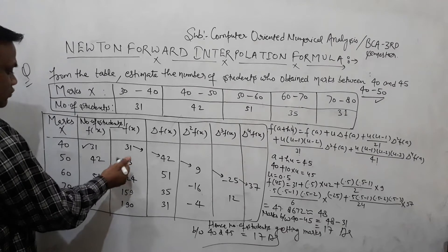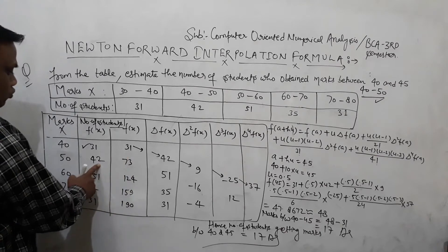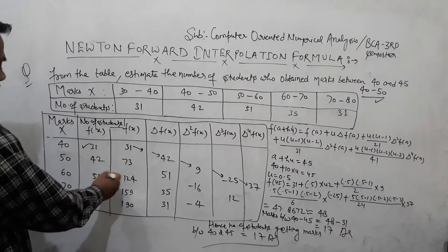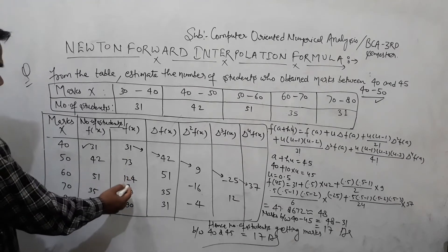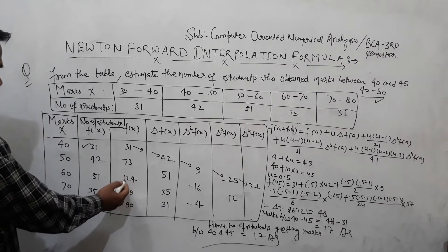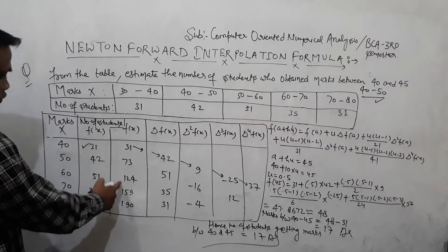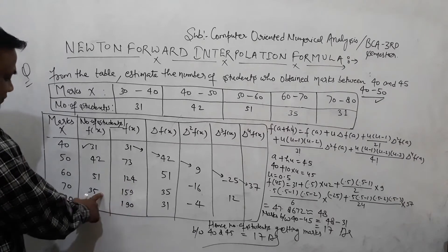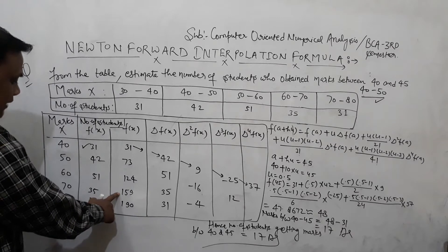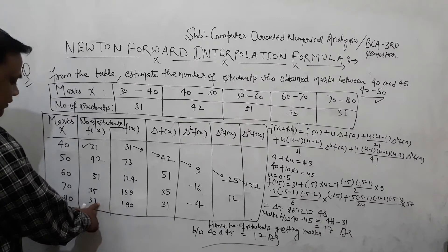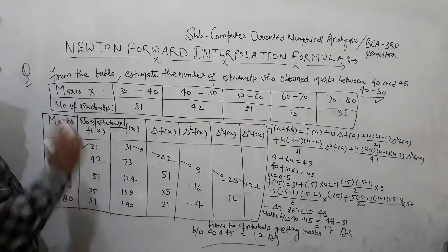Computing cumulative frequencies: first value is 41, add 42 to get 83, add 51 to get 124, add 35 to get 159, and add 31 to get 190. So the cumulative frequency table has values 41, 83, 124, 159, and 190 corresponding to the mark intervals.